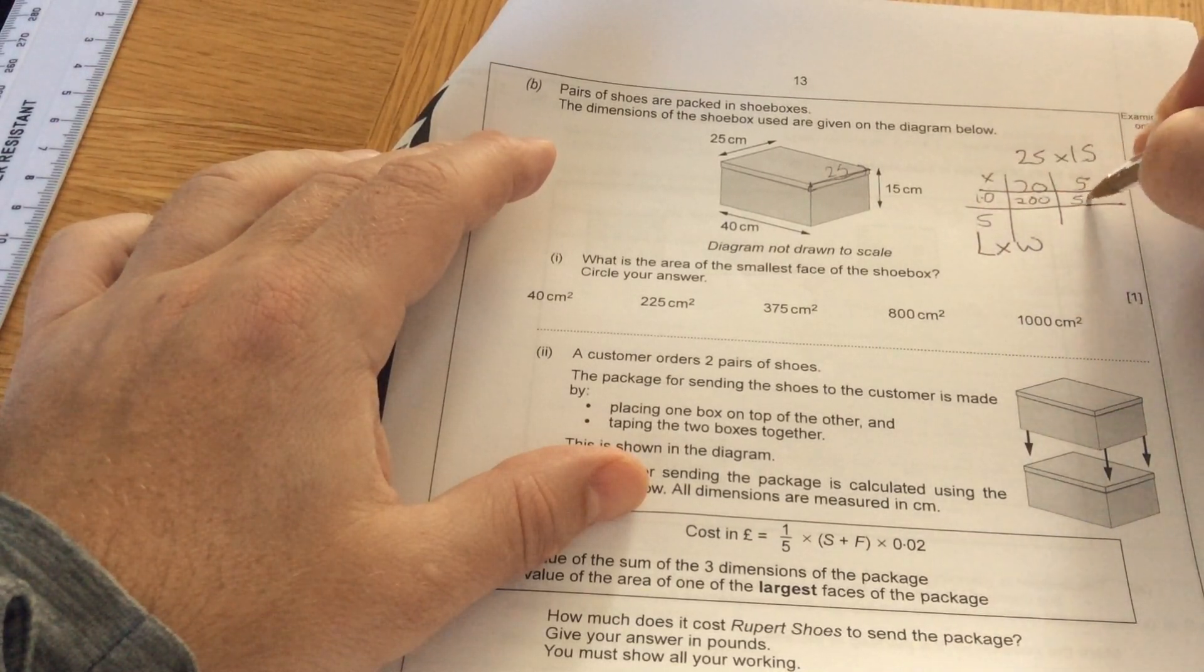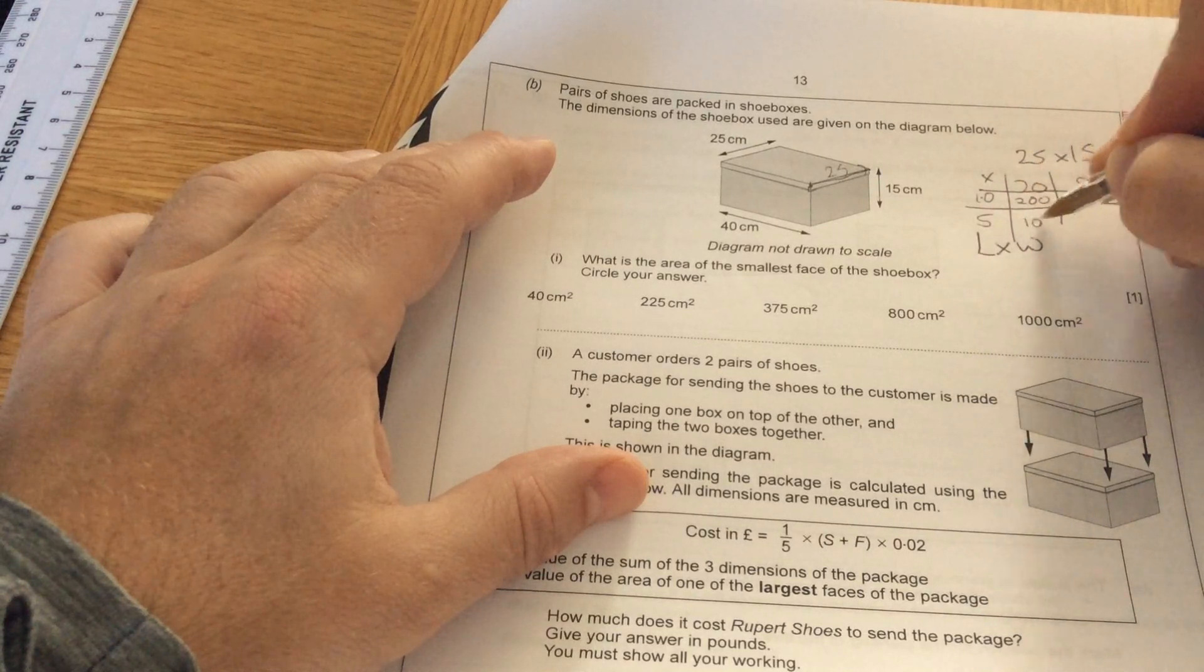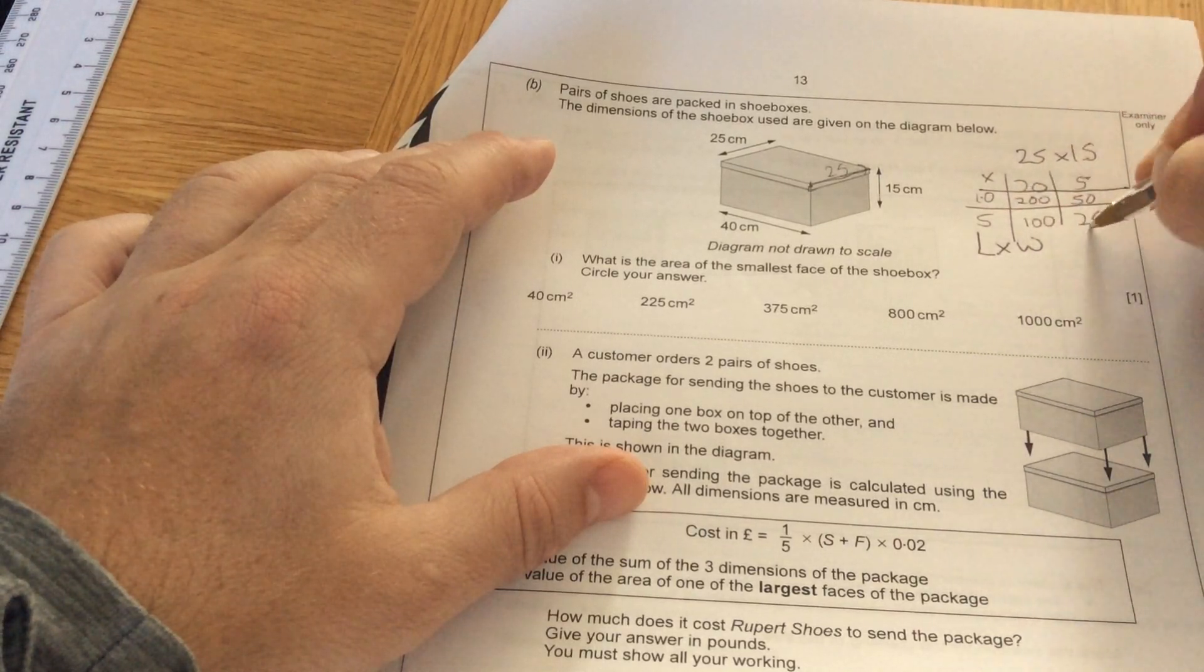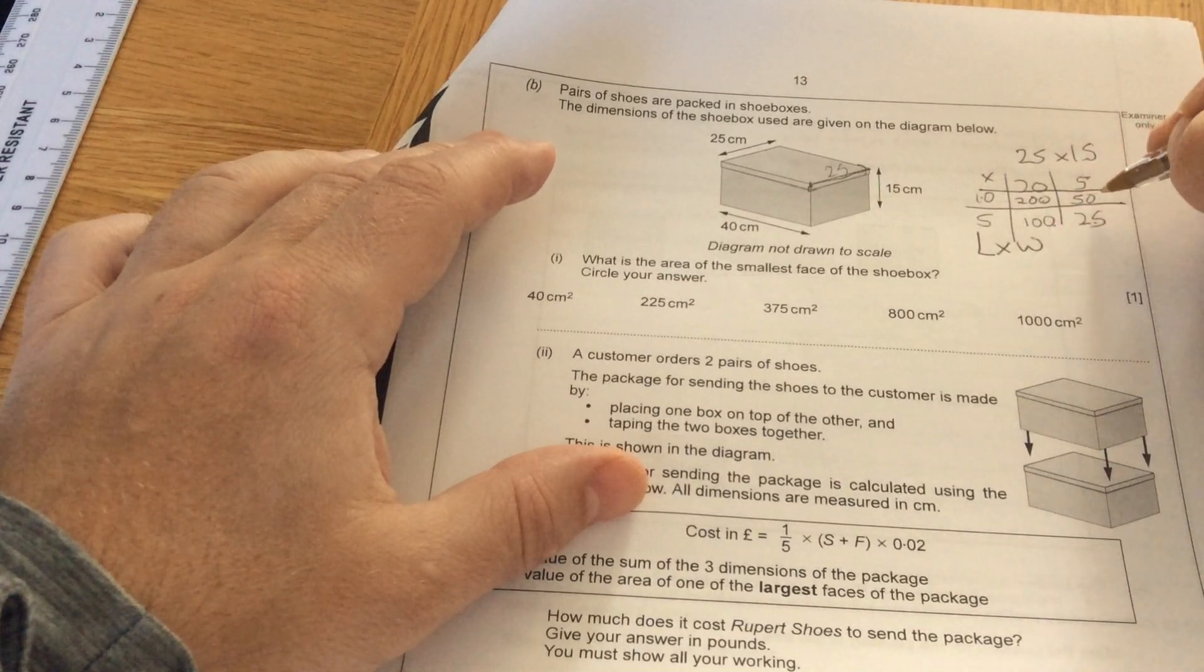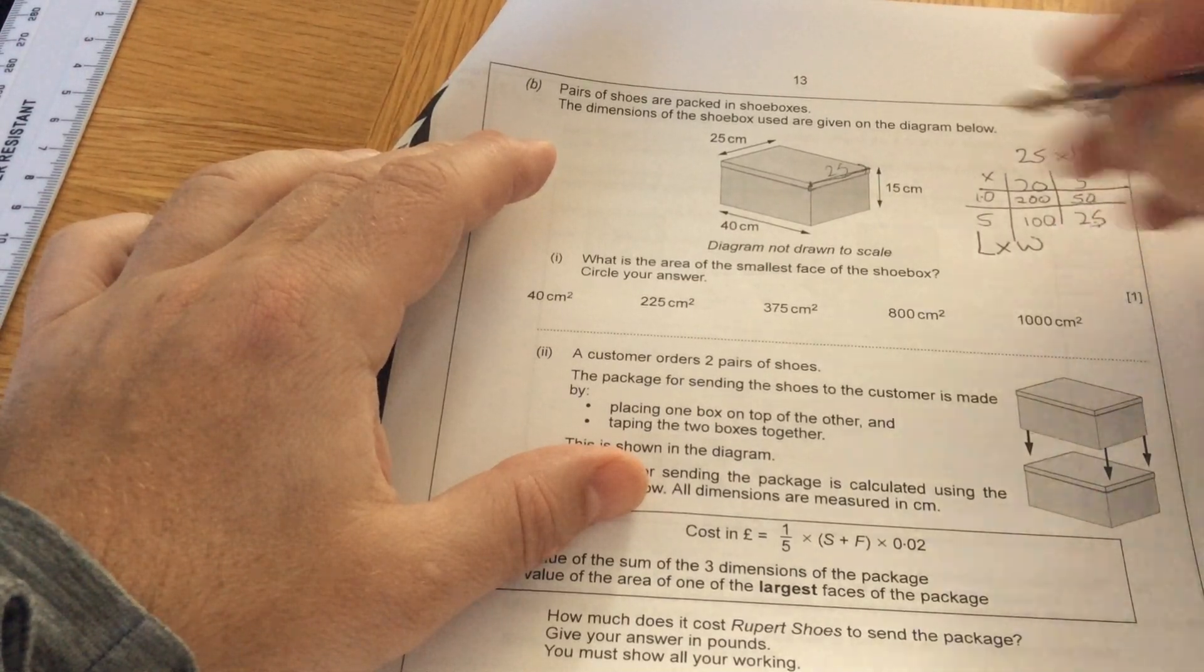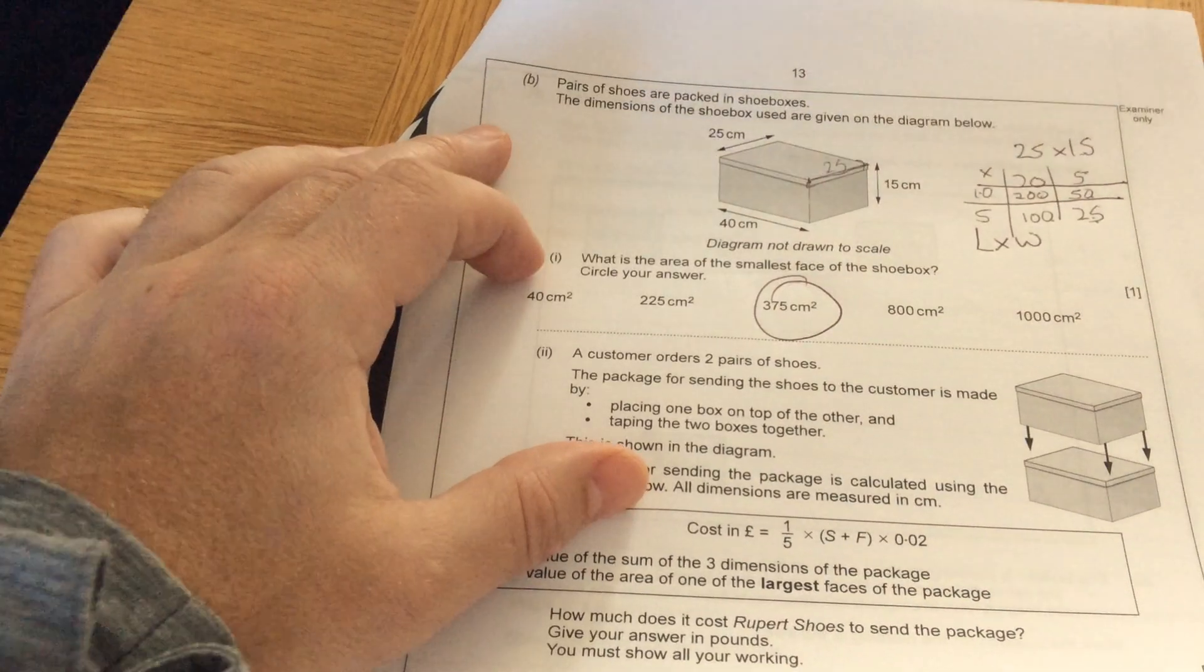10 times 20 is 200. 10 fives are 50. 5 twenties are 100. 5 fives are 25. So 200 plus 100 is 300, plus 50 is 350, plus 25 is 375.